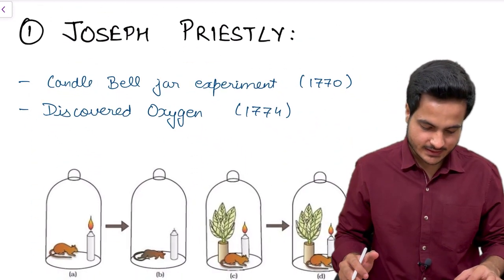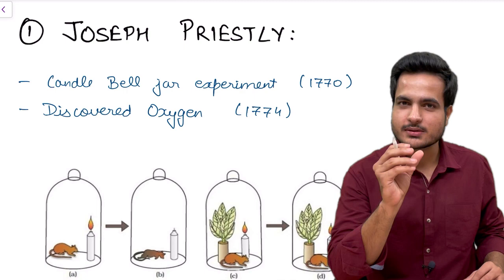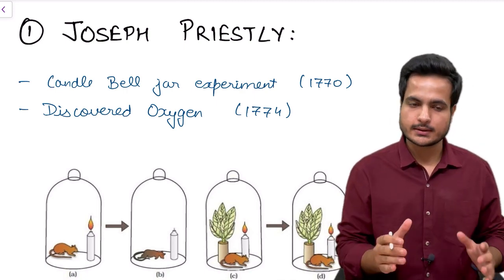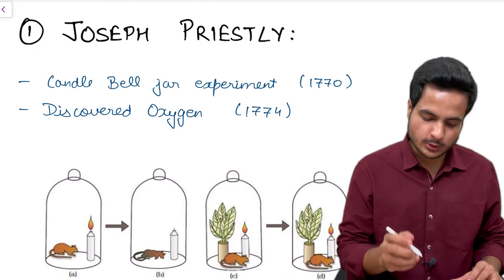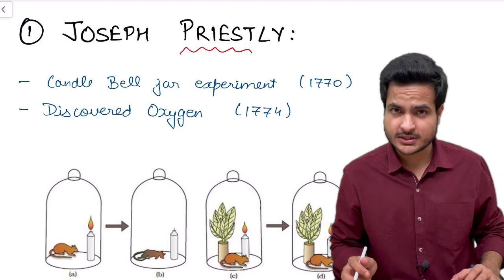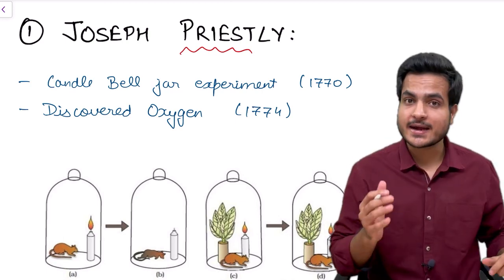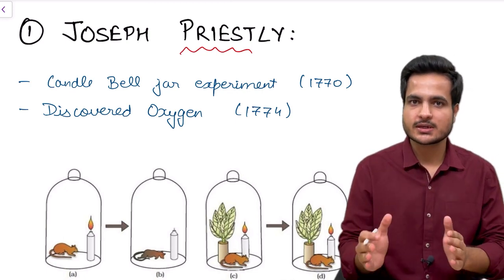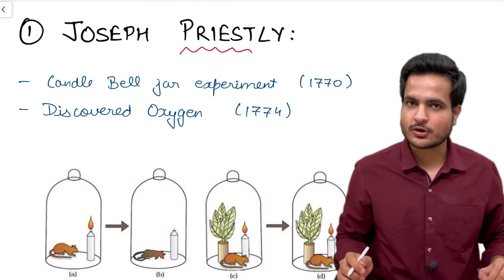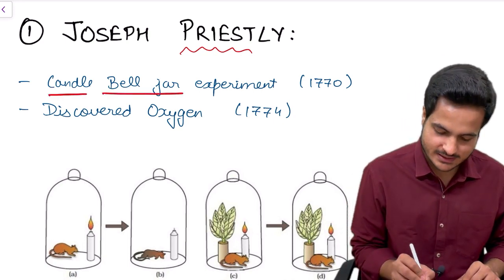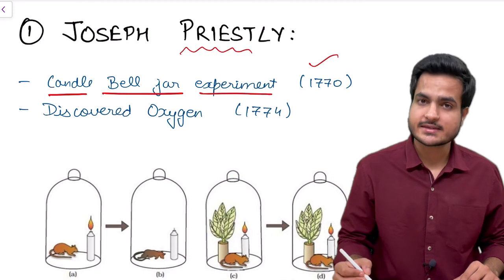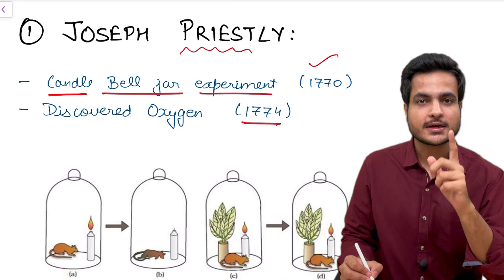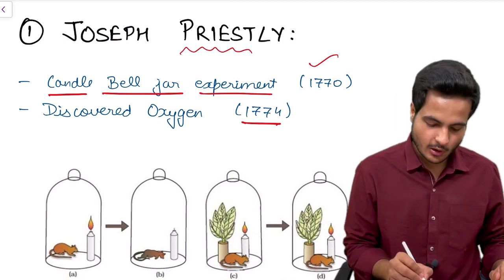Let's start with the first scientist, Joseph Priestley. I will share with you a little mnemonic so that you could relate the name of scientist and their discovery together. From the name Joseph Priestley, you need to remember priest. Priests are part of church, and in church they use candles for worshipping. So whenever you hear the name Joseph Priestley, a candle should strike your mind. He did the famous candle bell jar experiment in 1770. Four years later in 1774, he discovered an important gas and that was oxygen.